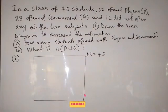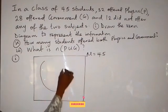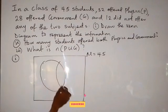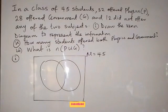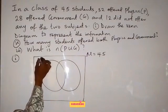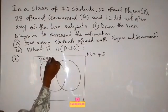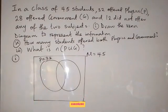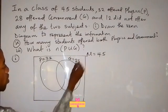And also, it says 32 offered physics and 28 offered government. So we are dealing with two things here, two subjects. So we have two circles intercepting each other, entering each other. That is how we draw this. And we label the first one as physics, that is 32. Physics equals 32. You don't have to put that 32 directly inside the circle. Now also the second one, government. And government, we have 28 offer government.